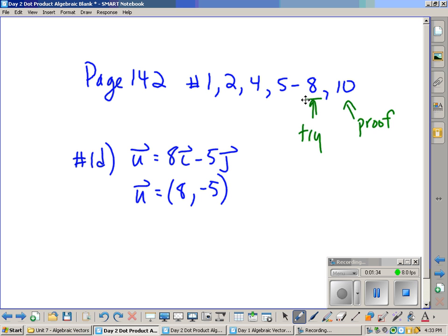So don't get fooled with that. If you see 8i, it just means your x must be 8. And negative 5j must mean that your y must be negative 5. Don't get tripped up on this one.